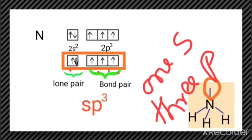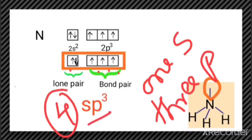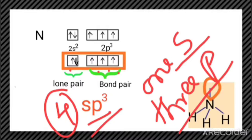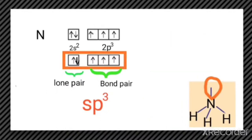The s orbital and three p orbitals undergo hybridization, resulting in the formation of four sp3 hybrid orbitals. Why four? Because one s and three p atomic orbitals are combining, giving four sp3 hybrid orbitals. These four sp3 hybrid orbitals adopt a tetrahedral geometry as shown in the figure.